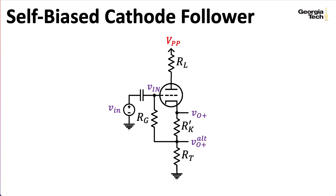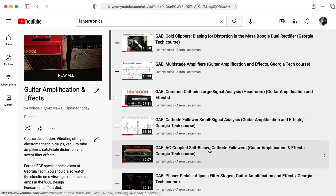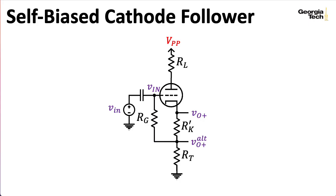A cathodyne is basically an extension of the cathode follower that we looked at in the previous lecture, and I'm going to assume that you've seen the lecture on self-biased cathode followers already. If you haven't, you can probably still pick up some tidbits, but I would recommend going back and checking out that lecture.